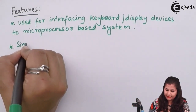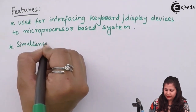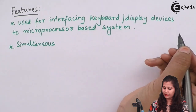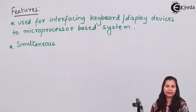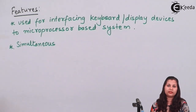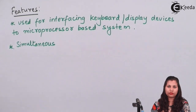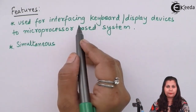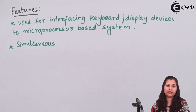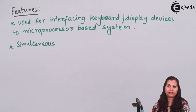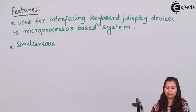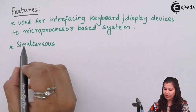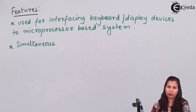One feature is that it allows simultaneous keyboard and display operations. The keyboard is an input device through which the user inputs data to the CPU. Display devices such as the monitor and printer are output devices. So both input and output devices can be connected and interfaced with microprocessor-based systems using the 8279.